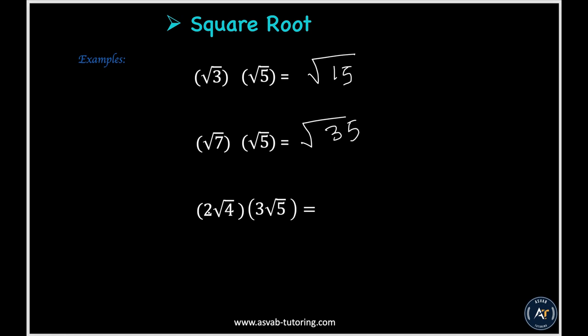If you have something on the outside and also inside, you need to multiply outside with outside and inside with inside. So that will give you 3 times 2 is 6 square root of 4 times 5 is 20. But you could simplify that one little bit more.